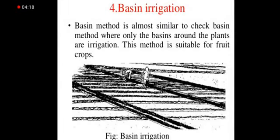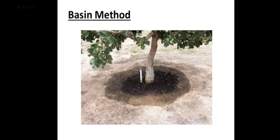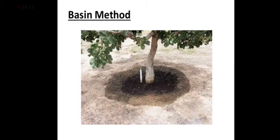Next is basin irrigation. In our day-to-day life, we mainly use basin irrigation when growing trees at home. The basin method is similar to the check basin method where only the basins around the plants are irrigated. This method is suitable for fruit crops — for example, banana trees, mango trees, or any kind of tree. We dig a small basin in the land around the tree and pour water once or twice in the morning. In the picture, you can see a dug basin near the tree with water being poured. That type of irrigation is called basin irrigation.